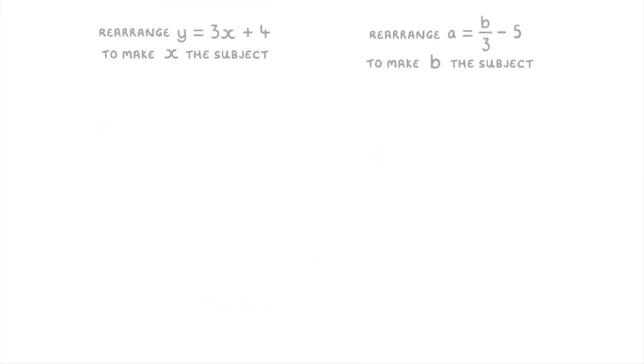In this first question on the left, they're asking us to make x the subject. So we need to end up with just an x on the left hand side equals something on the right. To do this we first of all want to get the x by itself by getting rid of this 4 and this 3.